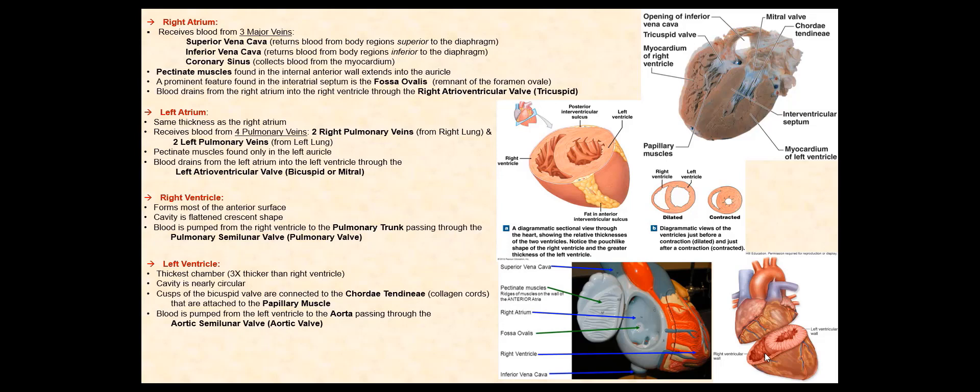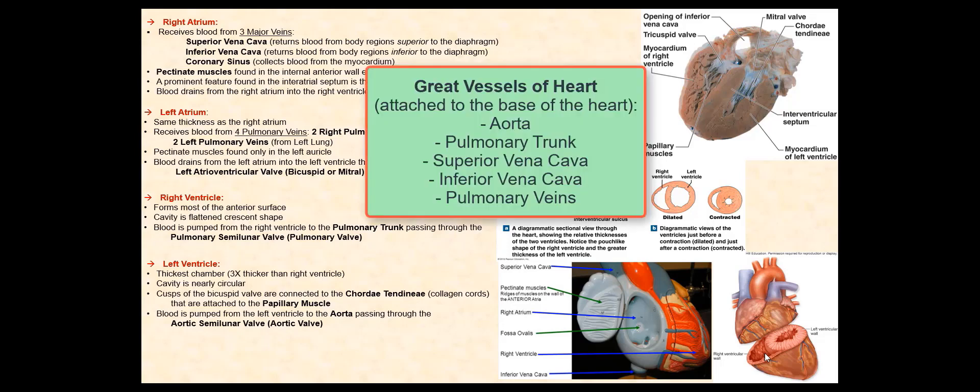Lastly, the great vessels of the heart that are directly attached to the heart are the aorta, the pulmonary trunk, the superior vena cava, the inferior vena cava, and the pulmonary veins.